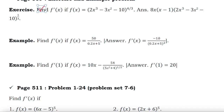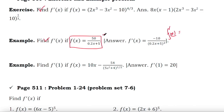Let me discuss this next example. This is your f(x). So the first derivative f'(x) will be — you can simplify this one first: 50 into (0.2x + 5) to the power negative 1, because we know x^(-1) = 1/x. So now we can differentiate this function. 50 is a constant, so 50 will stay here.